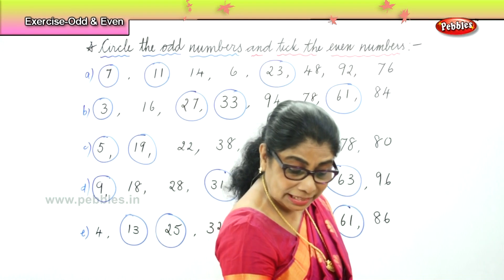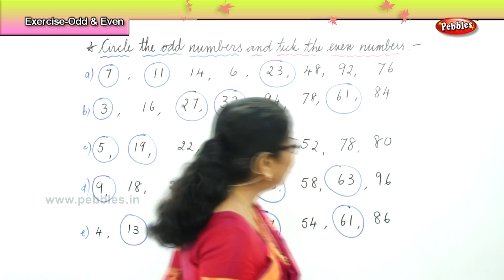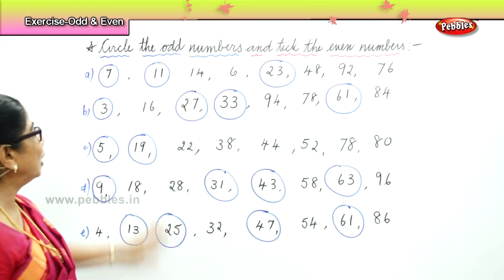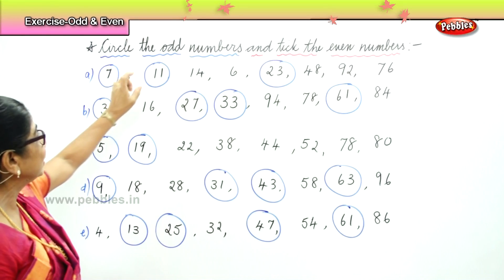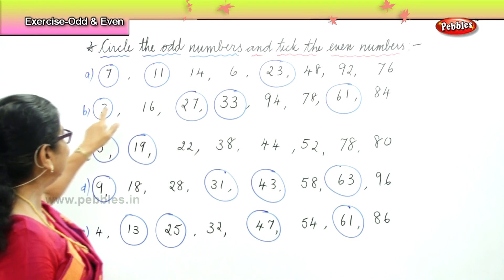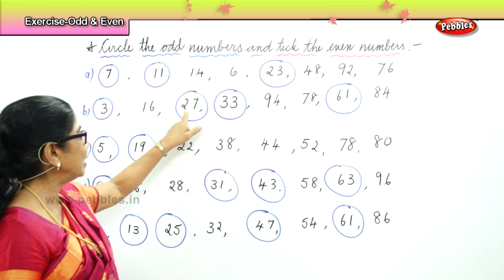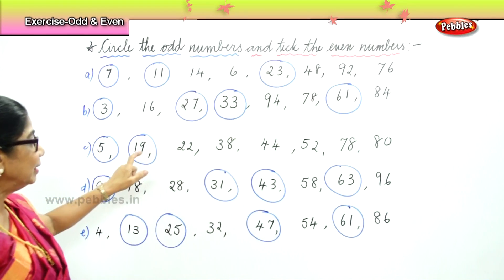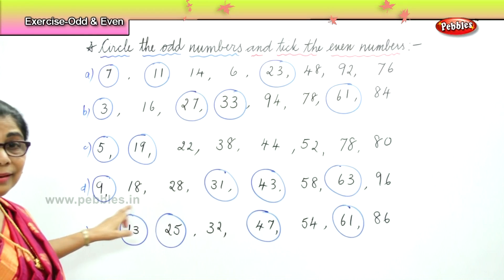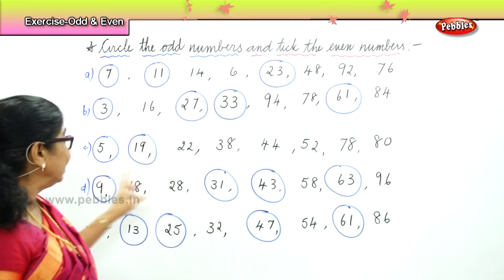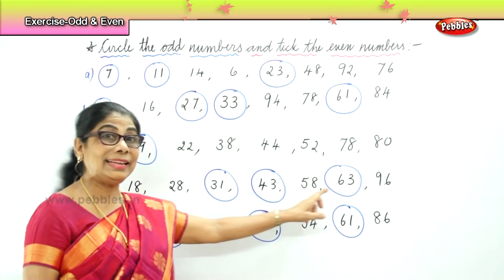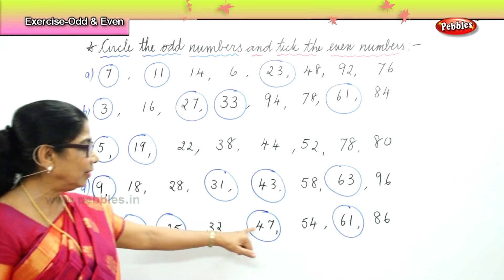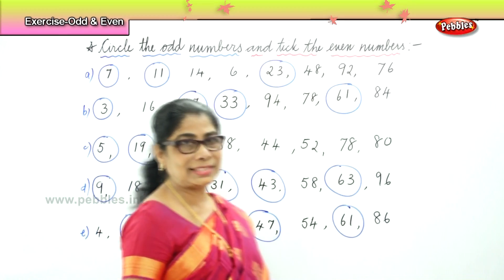Now we have identified and circled all the odd numbers. The odd numbers are: seven, eleven, twenty-three, three, twenty-seven, thirty-three, sixty-one, five, nineteen, nine, thirty-one, forty-three, sixty-three, thirteen, twenty-five, forty-seven, and sixty-one.